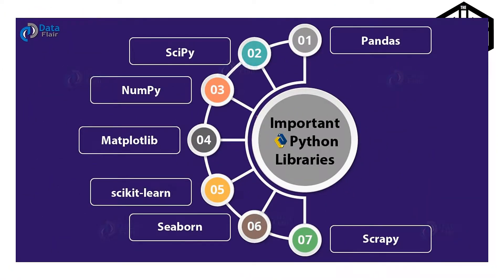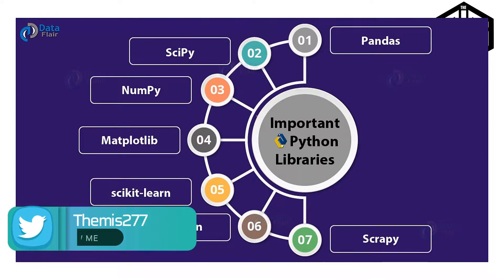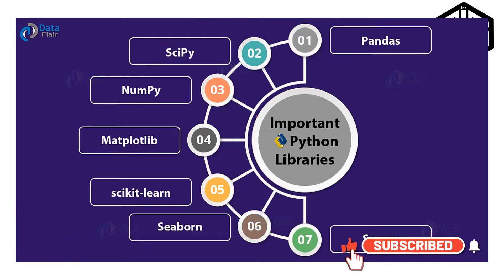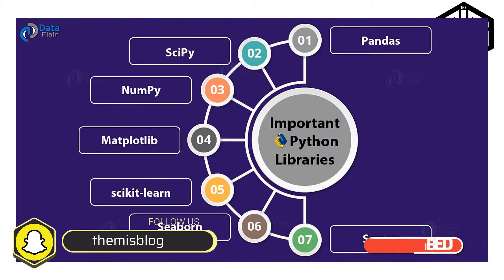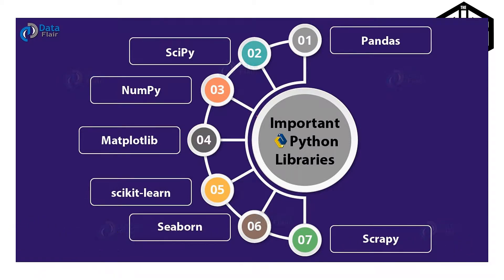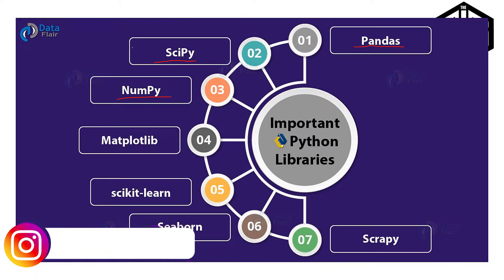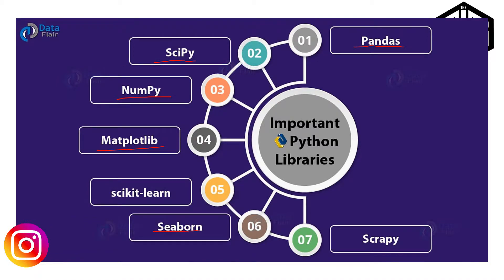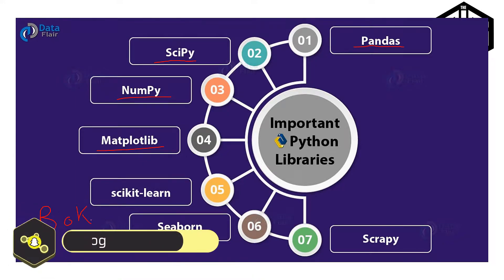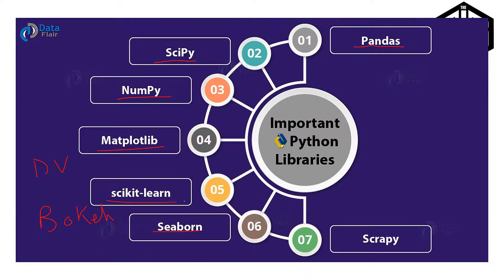Since we're going to learn Python to become a data scientist or data analyst, certain things should be covered in this track. First, the basics of Python should be covered in detail — data types, if and loops, object-oriented programming, and data structures. Then, since I'm learning Python for data science, packages should be covered: pandas for data manipulation, scipy, numpy for mathematical equations, matplotlib, seaborn, and bokeh for data visualization.